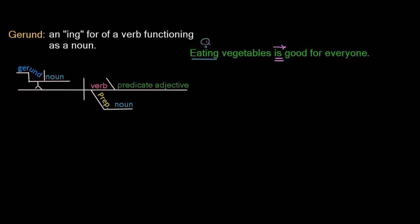The word vegetables is also functioning as a noun, and it is the object of our gerund. It will sit up on the platform with the gerund. We have one more noun, which is everyone, and that is an object of the preposition for. Our subject complement in this case is a predicate adjective: good. And as we mentioned, we have the preposition for.